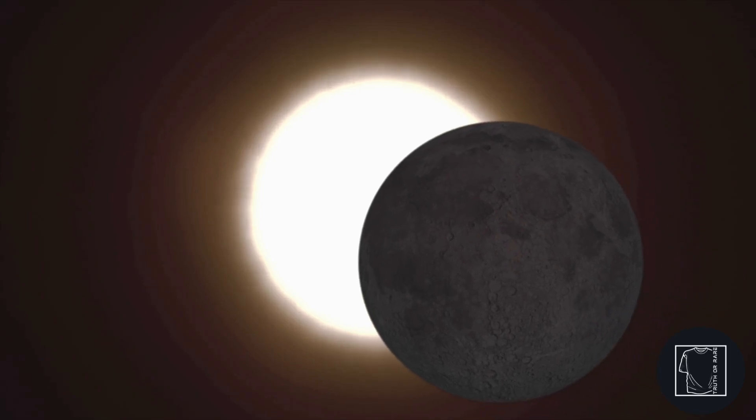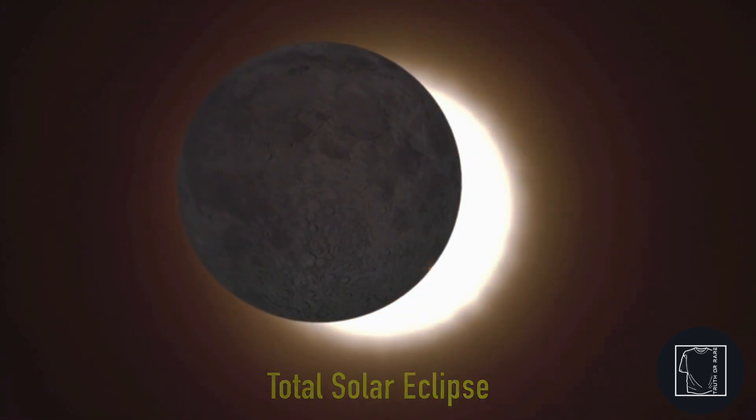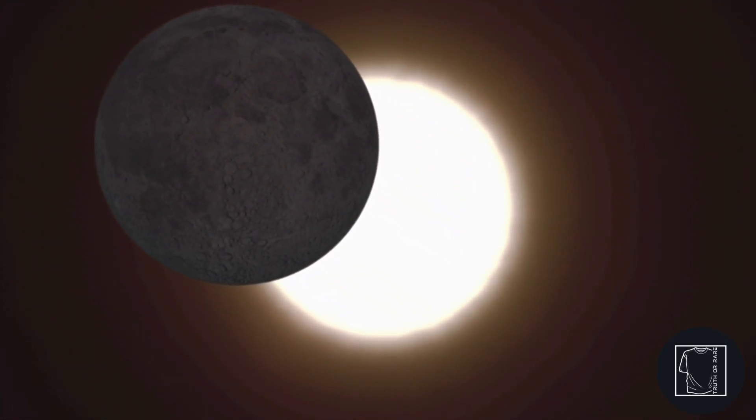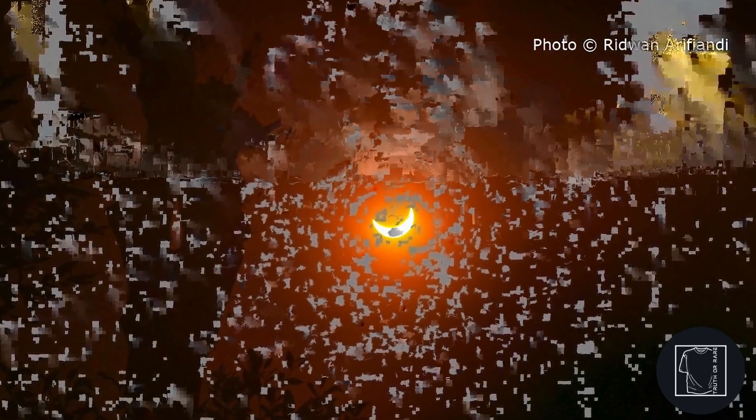When the moon completely covers the bright disk of the Sun, that's a total solar eclipse, and it happens roughly every year and a half somewhere on Earth. A partial solar eclipse is more common, happening at least twice a year.